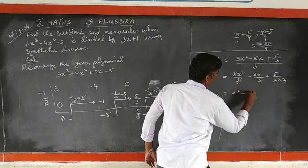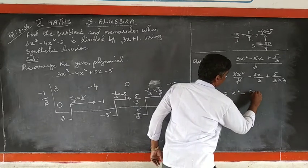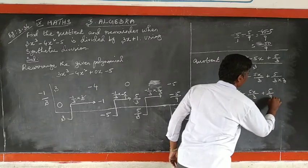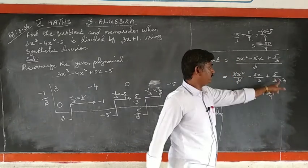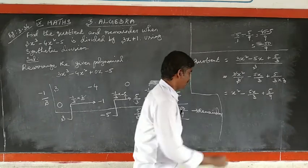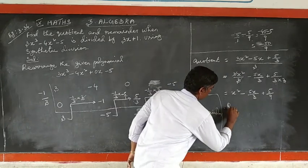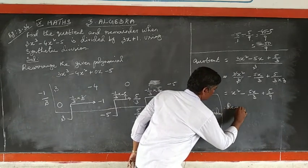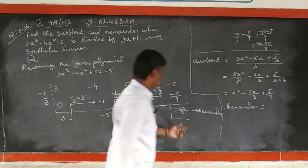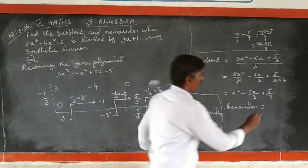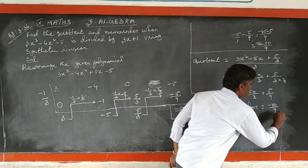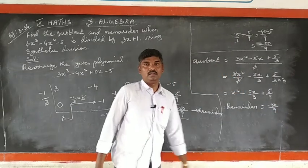So the quotient is x² minus 5x by 3 plus 5 by 9. This is the quotient. Therefore the remainder equals minus 50 by 9. That is all.